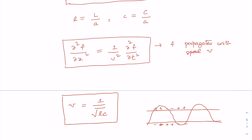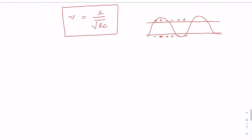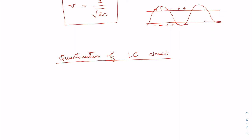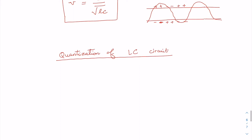Before we quantize the transmission line, let us see how we can quantize the LC circuit or LC oscillator, which is the basic building block of a transmission line. In the previous module, we learned the general procedure for canonical quantization of a classical system. The procedures were: first, get the Lagrangian of the classical system; then get the canonically conjugate momentum; then work out the Hamiltonian; look for the canonically conjugate variables — which are the ones satisfying Hamilton's canonical equations of motion; and finally, replace Poisson brackets by commutation brackets and write the conjugate variables and Hamiltonian in operator form.